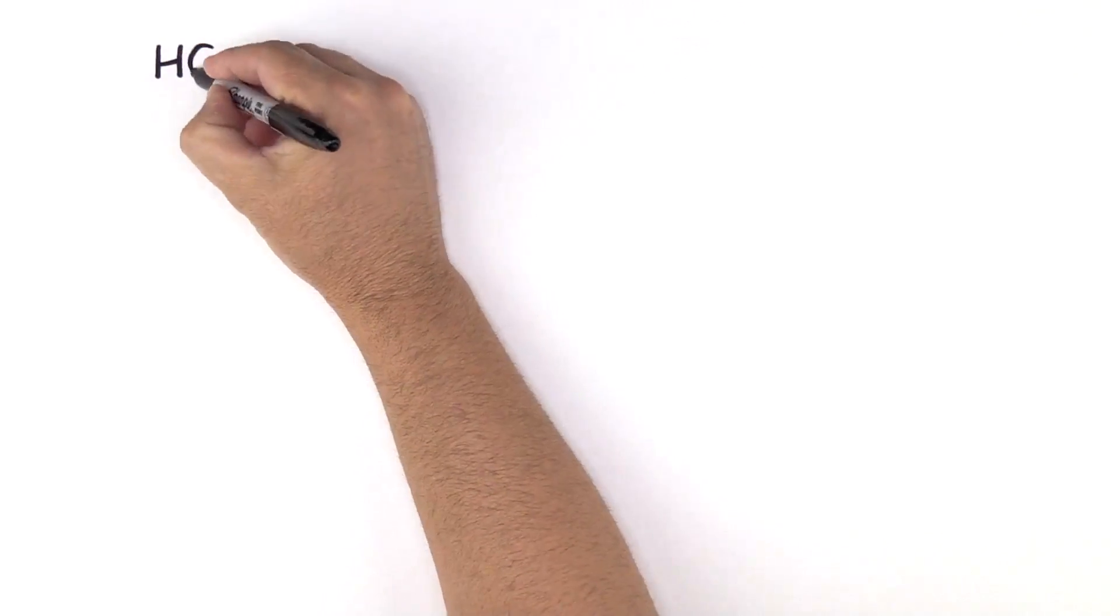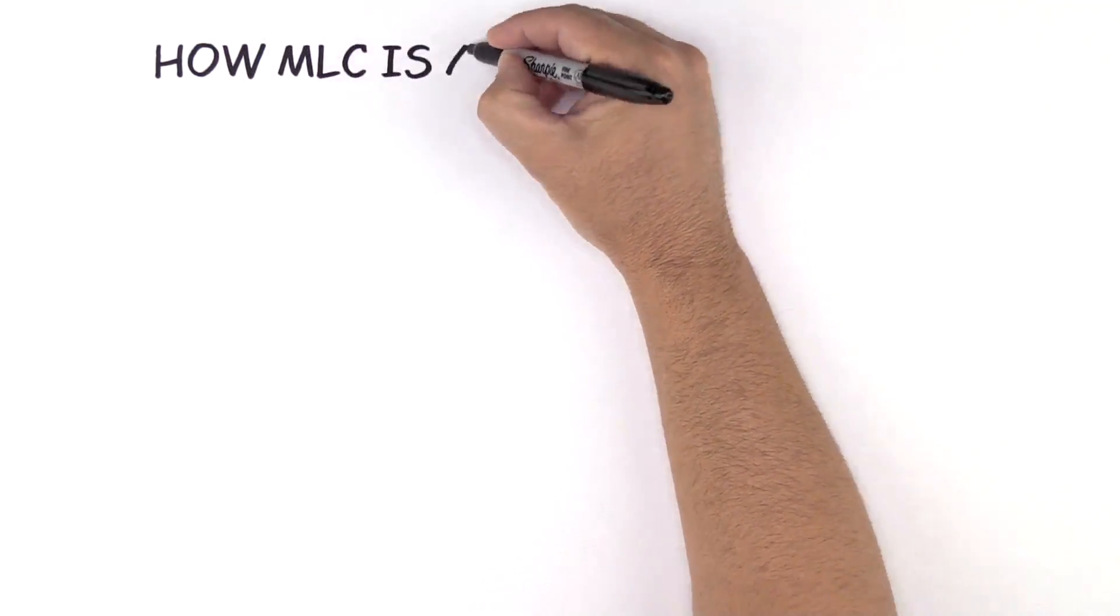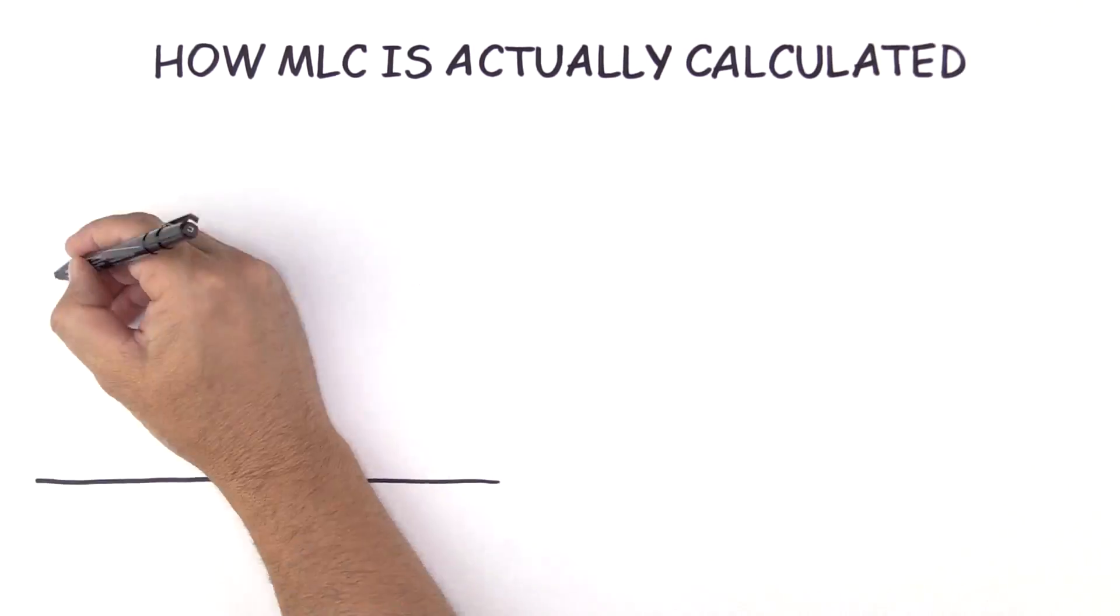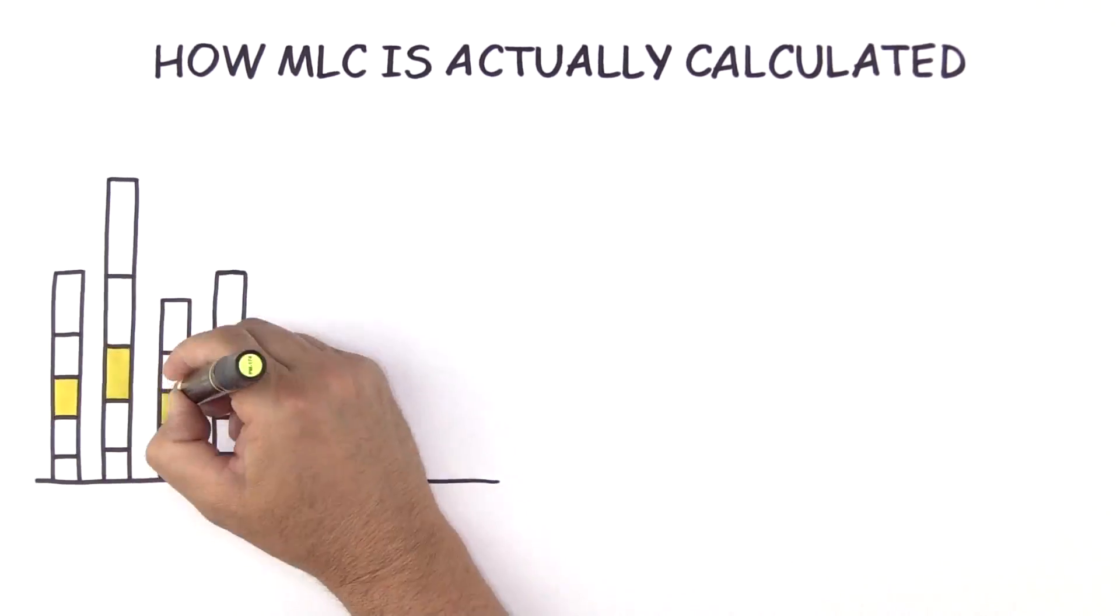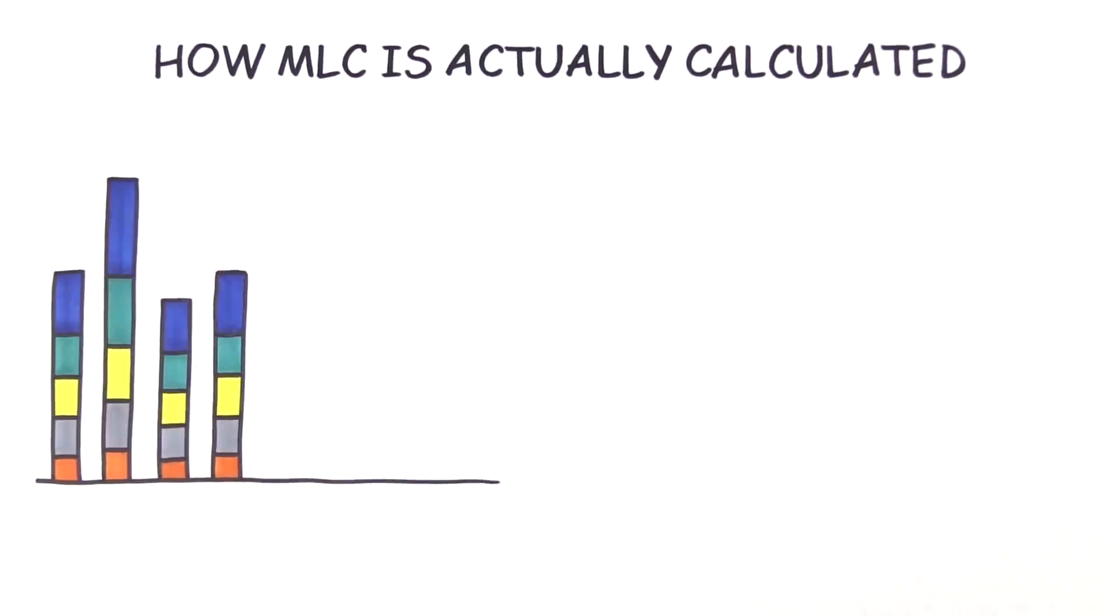This begs the question, how is MLC actually calculated? It starts with the rolling four-hour average. Each hour, your usage is identified and averaged with the previous three hours to create a rolling four-hour average.